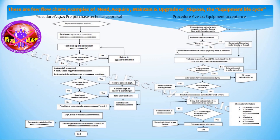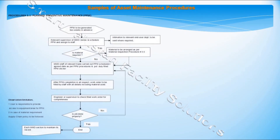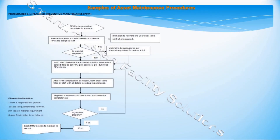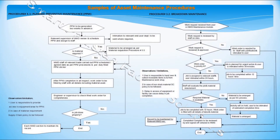The procedure of pre-purchase appraisal of equipment covers the need stage, then equipment acceptance covers the acquire action. Next are examples of preventive and breakdown maintenance procedures, which are part of the maintain section of the equipment life cycle.